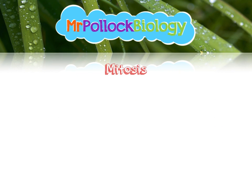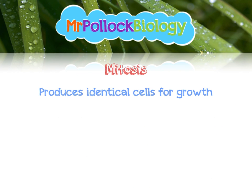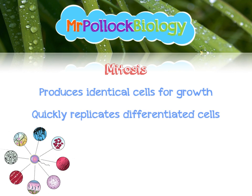So why is mitosis important? Well, it produces identical cells for growth. It's also used to quickly replicate cells that have differentiated. So you've got a really quick way of producing lots of identical cells for tissues — like muscle tissue, blood tissue, or nerve tissue, or any tissue. It's also really useful for repairing damaged cells.